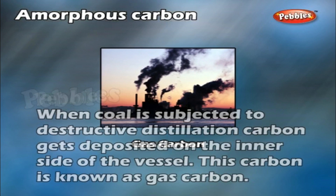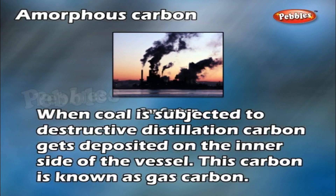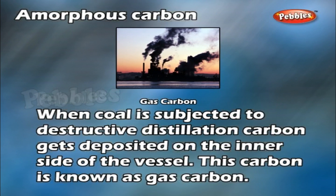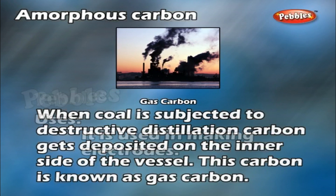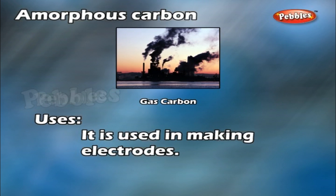Gas carbon: When coal is subjected to destructive distillation, carbon gets deposited on the inner side of the vessel. This carbon is known as gas carbon. Uses: It is used in making electrodes.